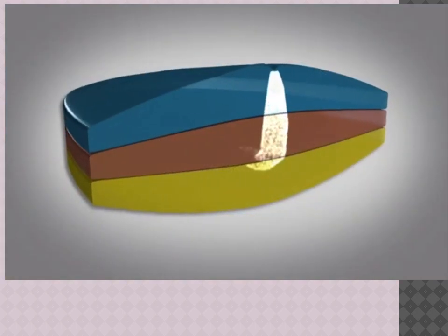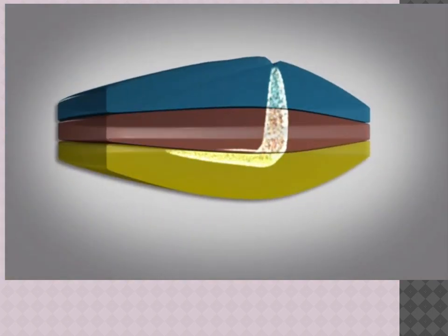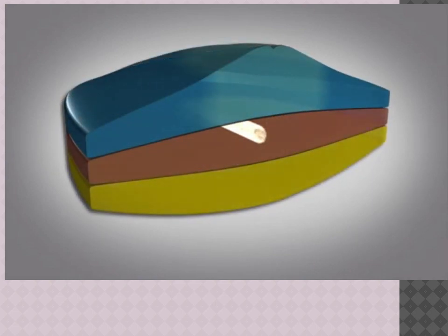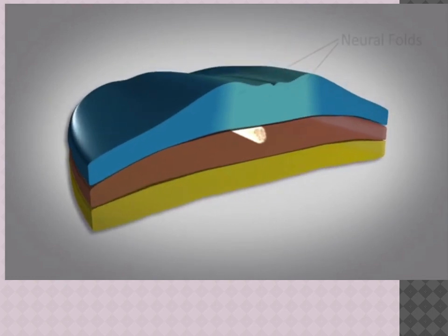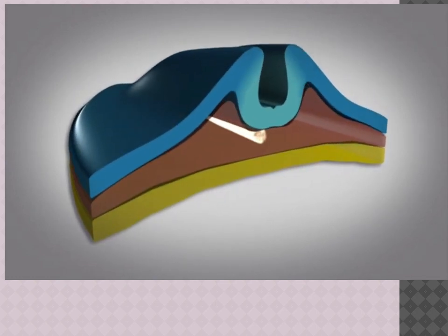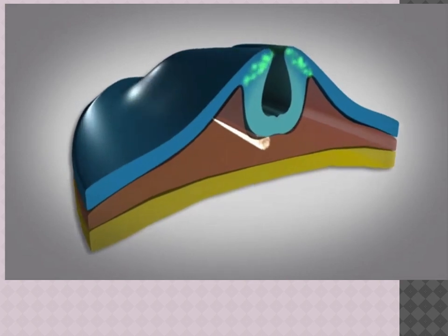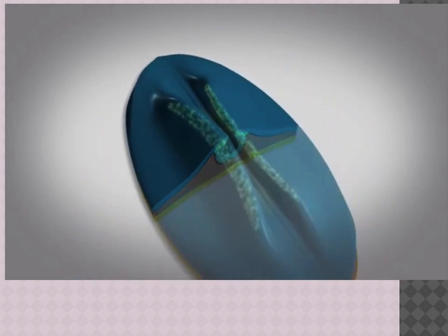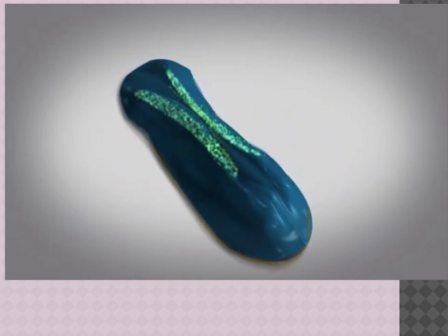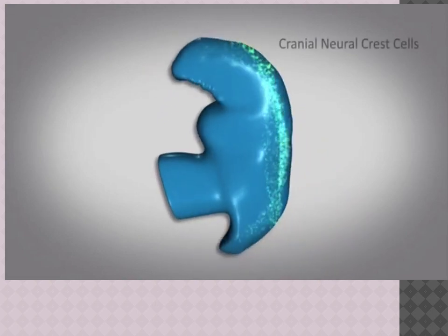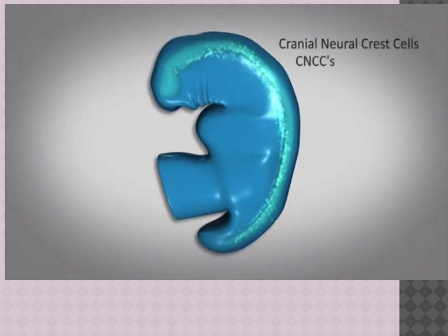In the third to fourth weeks, a cord called the notochord is formed, which induces cells in the overlying ectoderm to thicken, forming the neural plate along the back of the embryo. The edges of the neural plate elevate to form neural folds that fuse to form the neural tube. During this process, neural crest cells form along the entire length of the tube. Those from the cranial region are called cranial neural crest cells, or CNCCs.